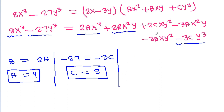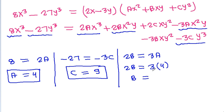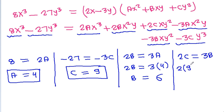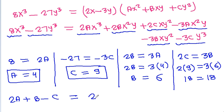The coefficient of x²y must be 0, so 2b = 3a. That gives 2b = 3 times 4, so b = 12/2 = 6. We can verify: the coefficient of xy² must also be 0, so 2c = 3b, and 2 times 9 = 3 times 6, which gives 18 = 18. So 2a + b - c = 2 times 4 + 6 - 9 = 8 + 6 - 9 = 5.